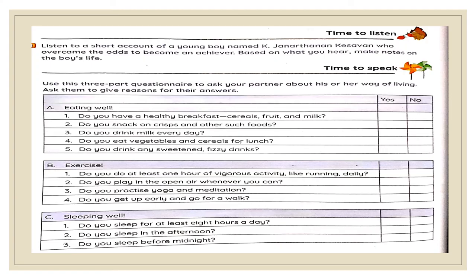Come to time to listen. This is a speaking and listening exercise. Listen to a short account of a young boy named K. Janartanan Keshawal, who overcame the odds to become an achiever. Based on what you hear, make notes on the boy's life. Then use a three-part questionnaire to ask your partner about his or her way of living. Ask them to give reasons for their answers. The audio you will find in the audio library for the book The English Channel, and accordingly you are going to do this exercise.